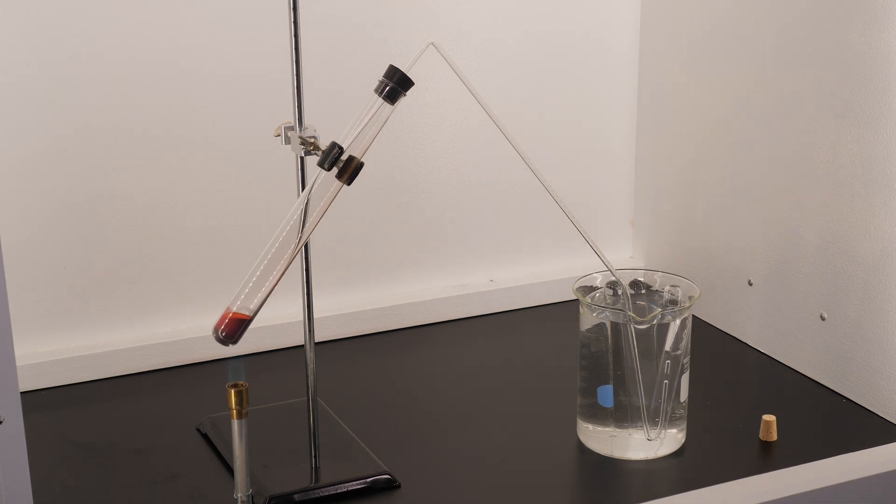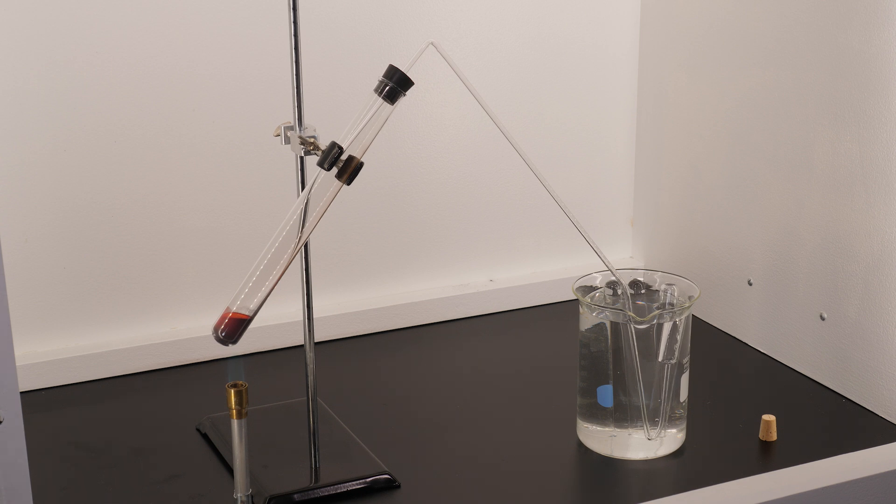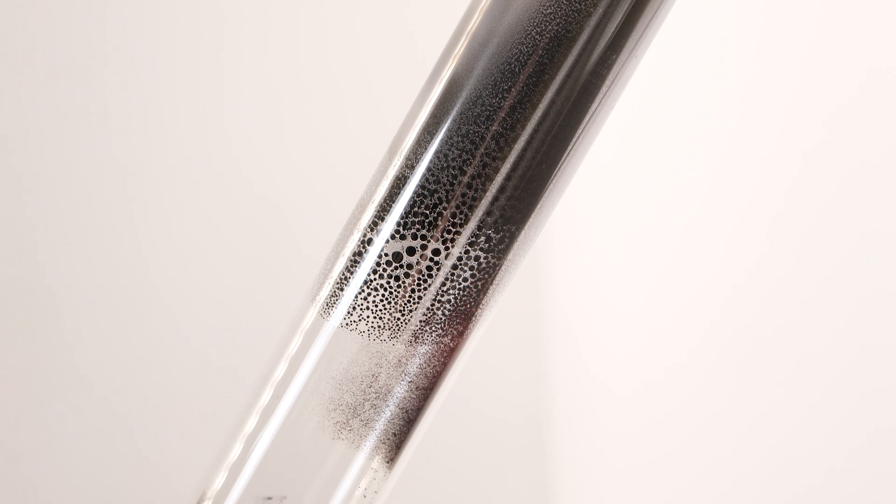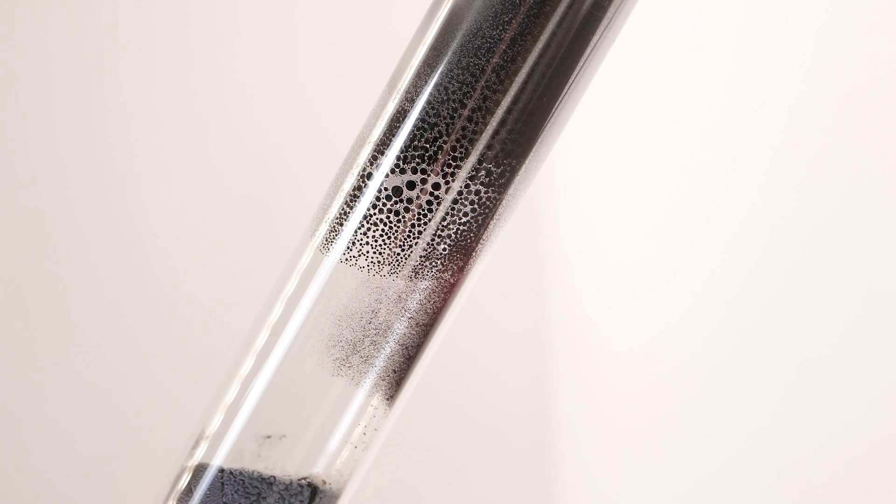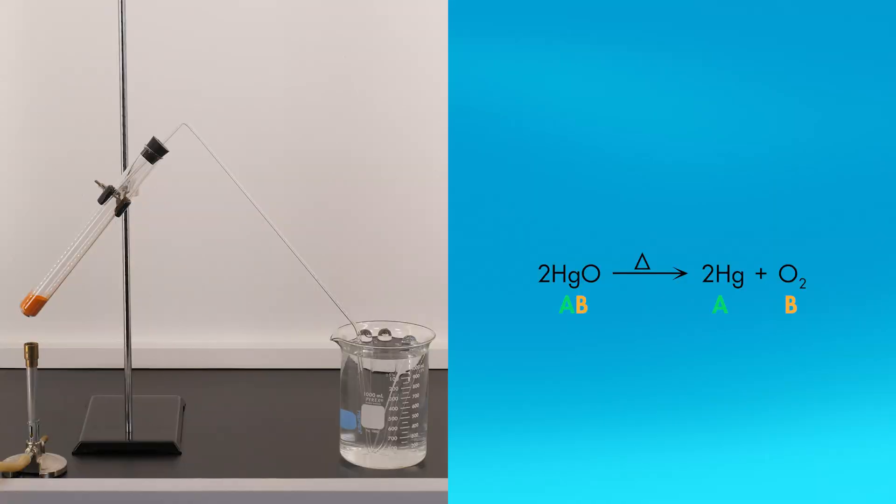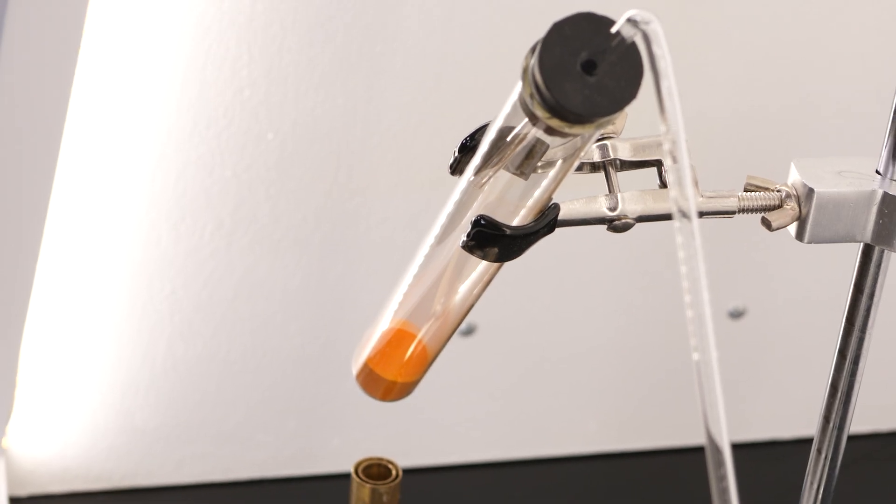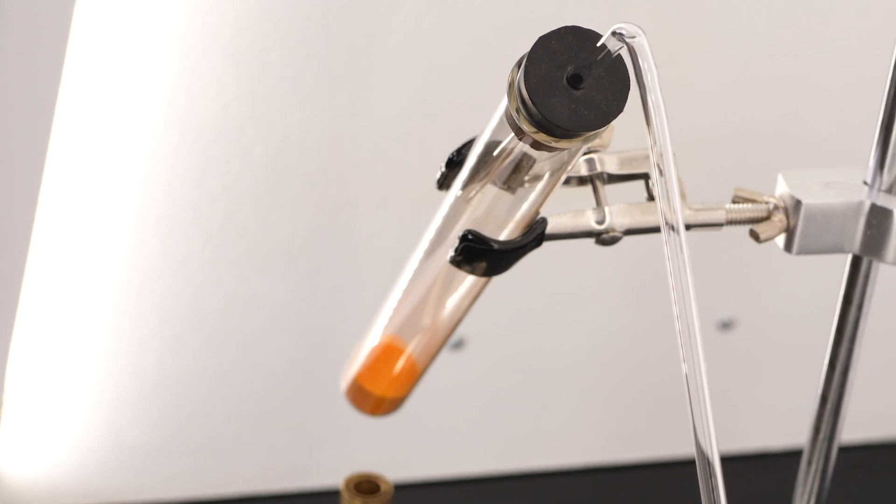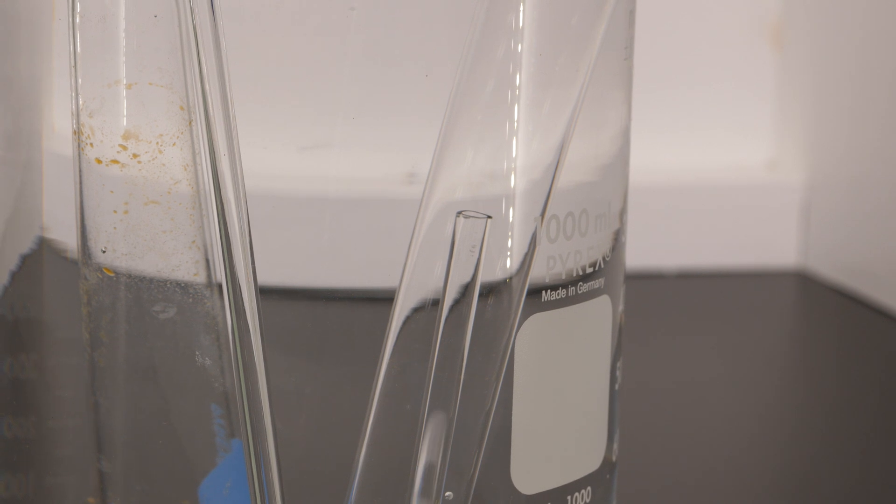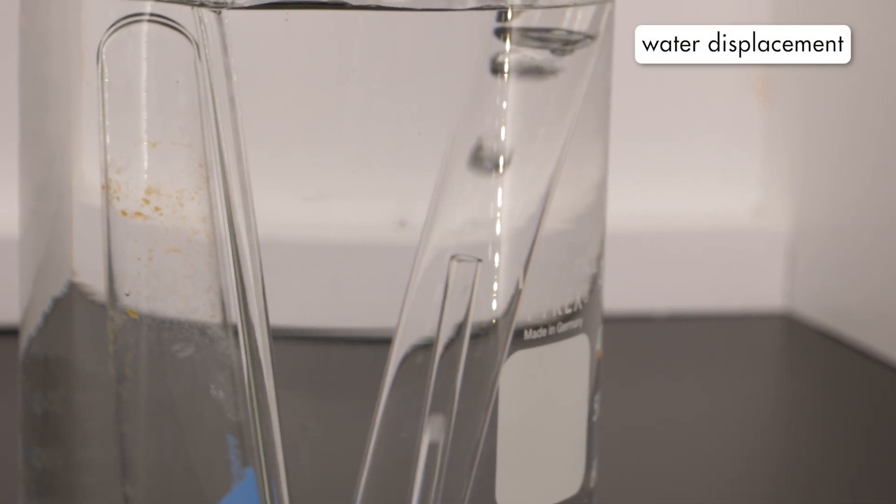Because mercury vapor is toxic, we work under the fume hood to avoid inhaling the vapor. As the mercury vapor cools, it condenses to form droplets of liquid mercury. The second product of the thermal decomposition of mercury(II) oxide is oxygen gas. As the oxygen is released, it passes through this tube. Here, we are collecting the oxygen by water displacement.